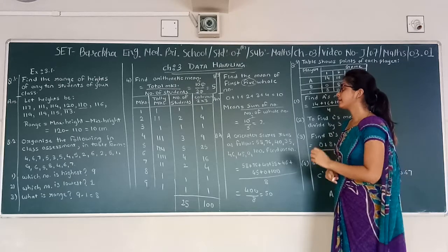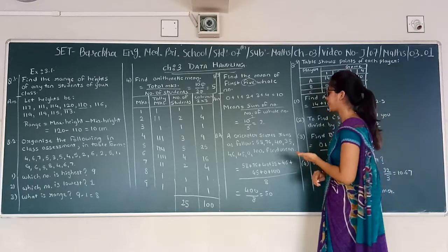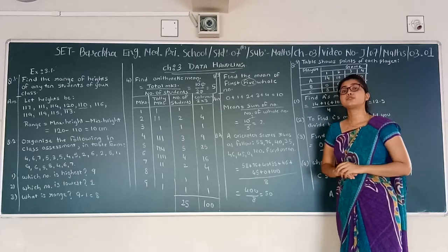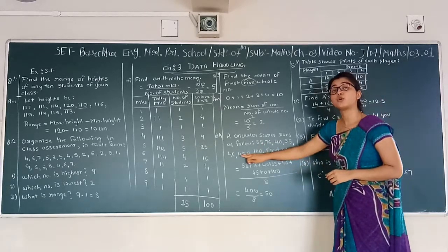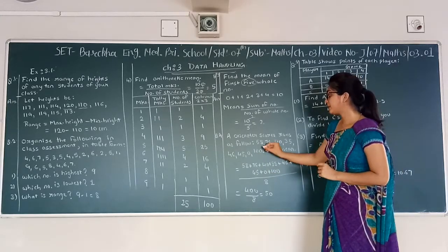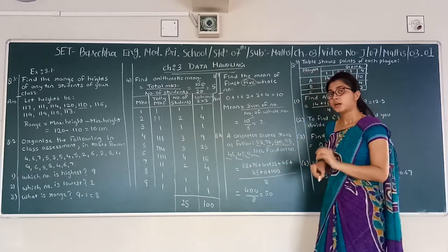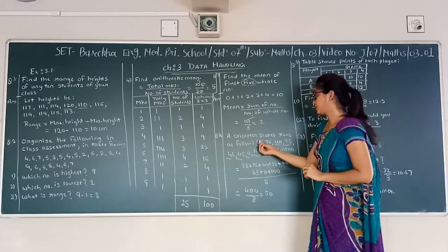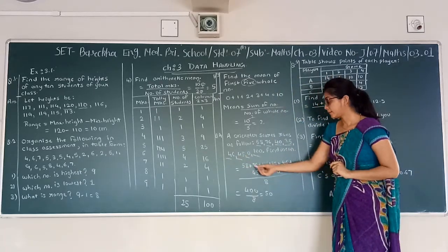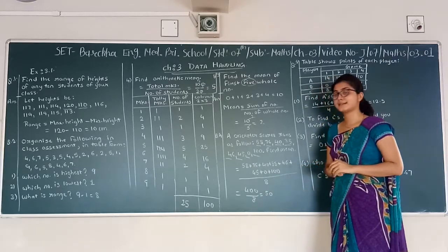Next question: a cricketer scores runs as follows — 58, 76, 40, 35, 46, 45, 0, and 100. There are 8 numbers in total. To find the mean we divide the total by 8. The total of all these numbers is 400. Dividing 400 by 8 gives the answer 50.